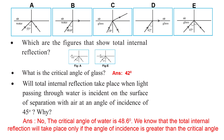Total Internal Reflection does not take place when light passing through water is incident on the surface of separation with air at an angle of incidence of 42 degrees, because the critical angle for water is 48.6 degrees, and 42 degrees is not greater than the critical angle.